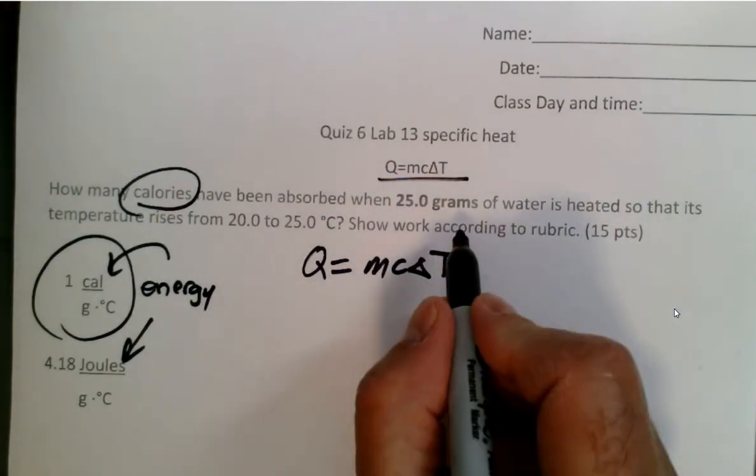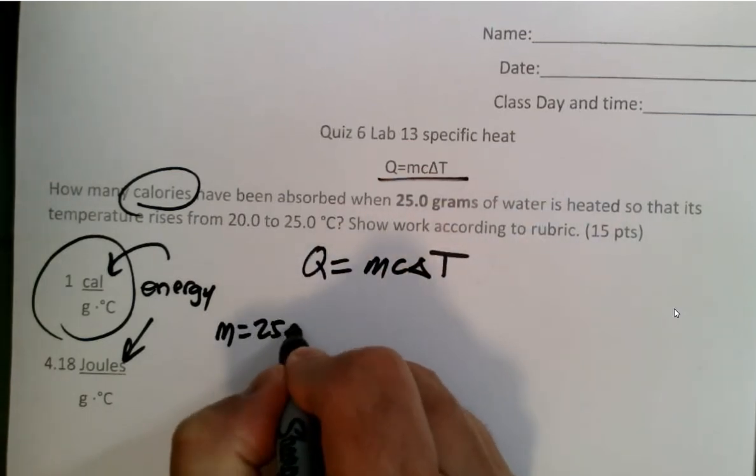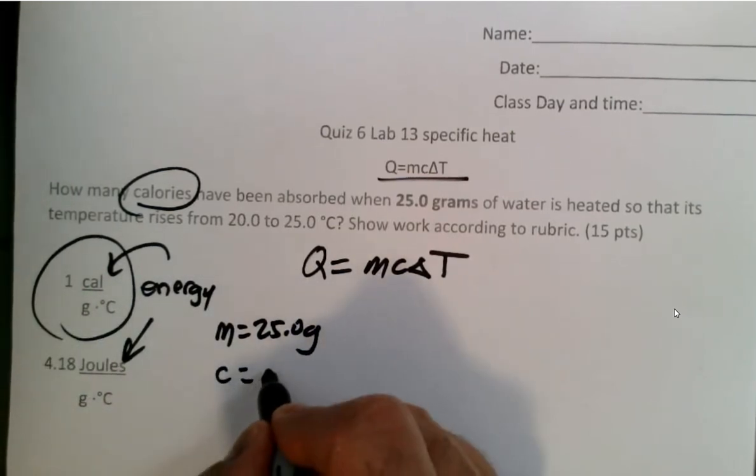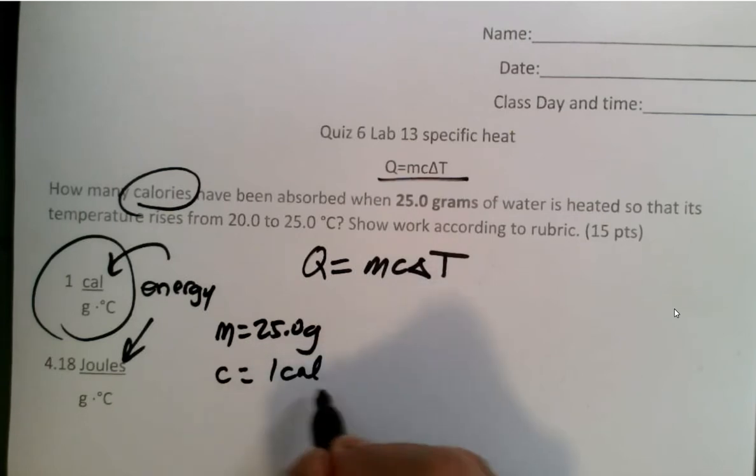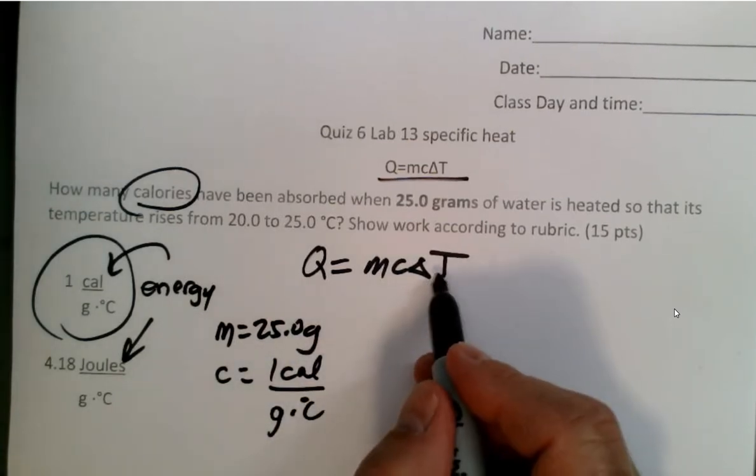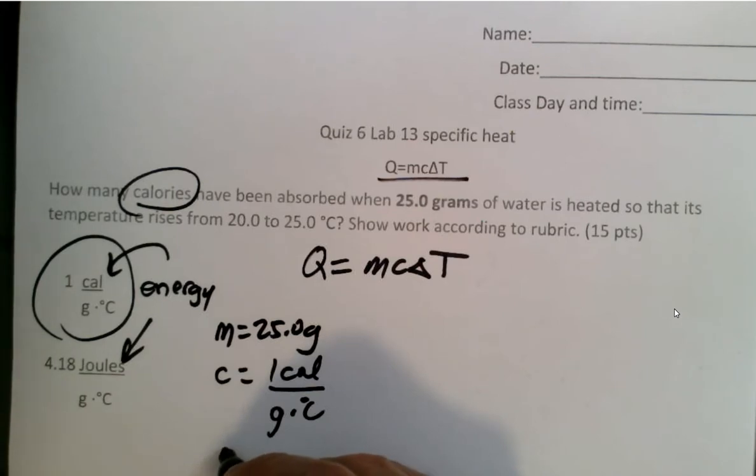Let's list the data first. What is the mass of water? The mass is 25.0 grams. We already know the specific heat of water - one calorie is how much it takes to raise one gram of water one degree Celsius. The change of temperature - the initial temperature is 20, isn't it? Initial temperature is 20.0. Final is 25.0 degrees Celsius.